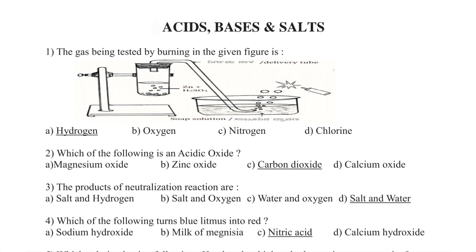In the given figure, it is the reaction between zinc and sulfuric acid. When zinc reacts with sulfuric acid, this is a reaction between a metal and an acid. When metals react with acid, hydrogen gas is liberated along with the formation of a metal salt. So, zinc sulfate salt is formed and hydrogen gas is liberated. The correct answer is Option A — Hydrogen.